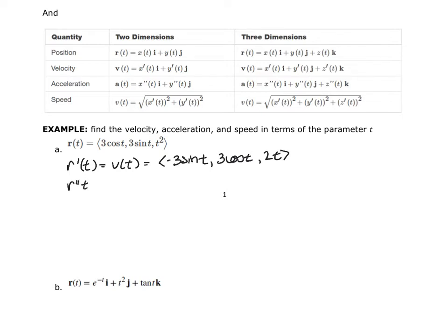So that's the velocity vector. The acceleration is the second derivative, which is the first derivative of velocity. Taking the second derivative gives: negative three cosine of t, negative three sine of t, and two.